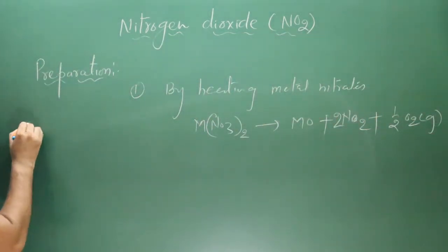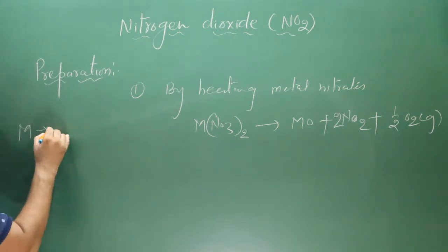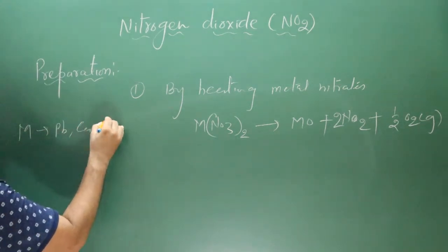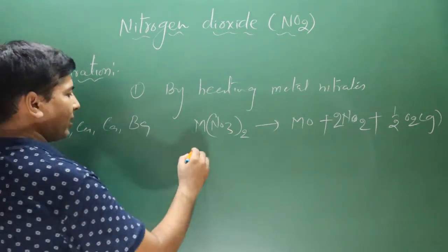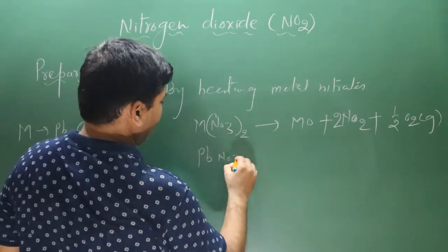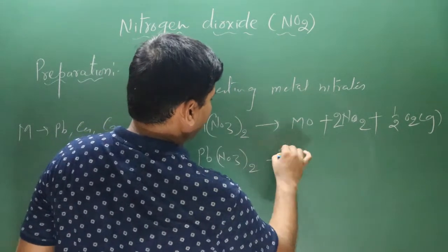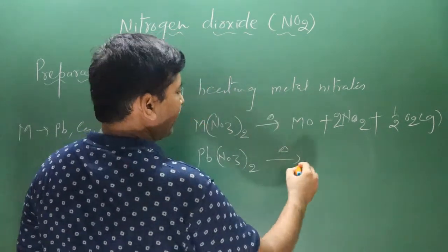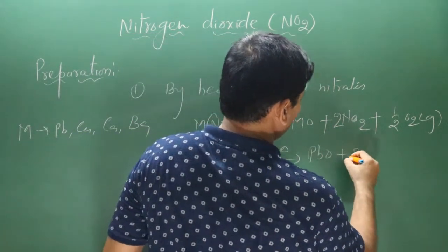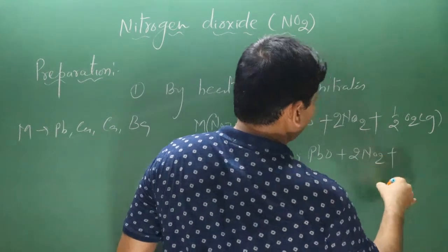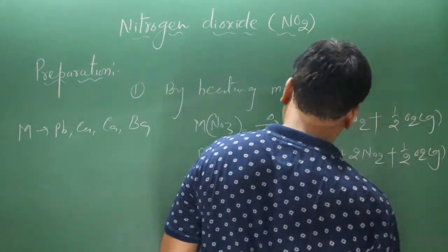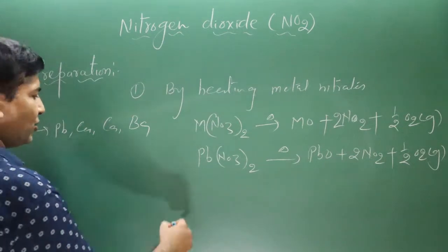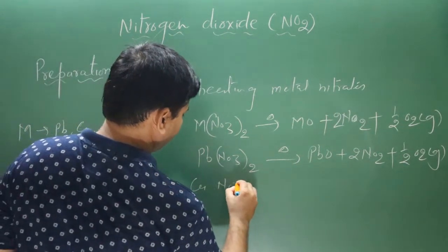The metal M can be lead, copper, calcium or barium. For example, on heating lead nitrate, we get lead oxide, two molecules of nitrogen dioxide, and oxygen gas.